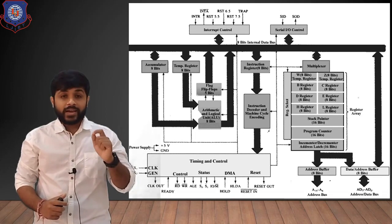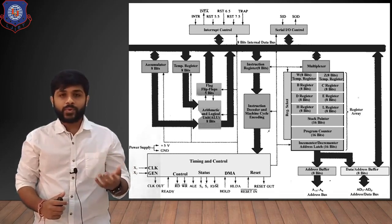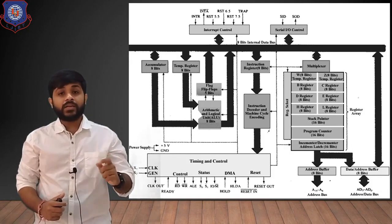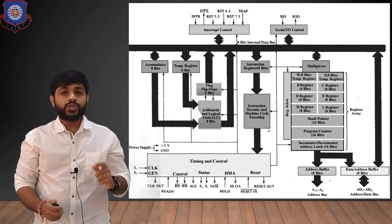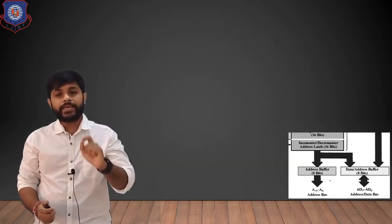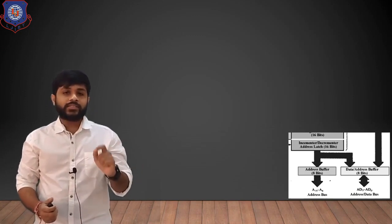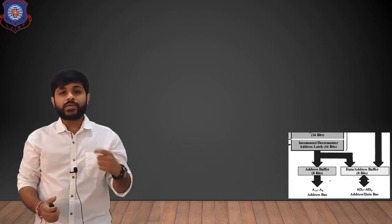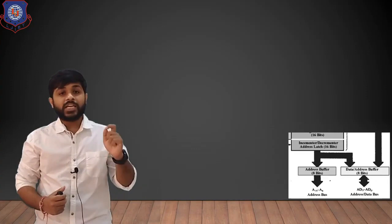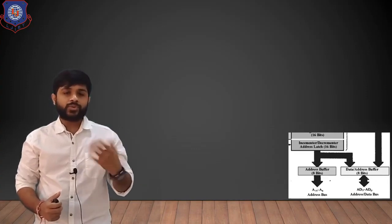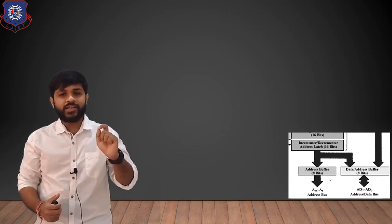But the address bus and data bus are not given separately. To save the number of pins, the higher-order bus is given as the address bus, A8 to A15, while the lower-order bus is AD0 to AD7. If they had given separate address and data buses, it would consume 24 pins. To save pins, they combined them into 16 pins.